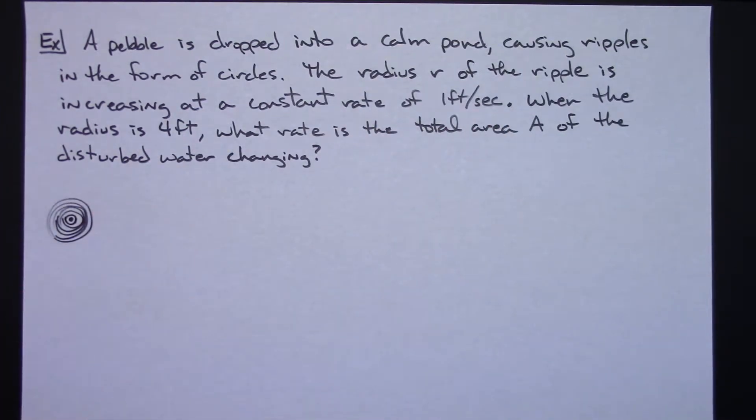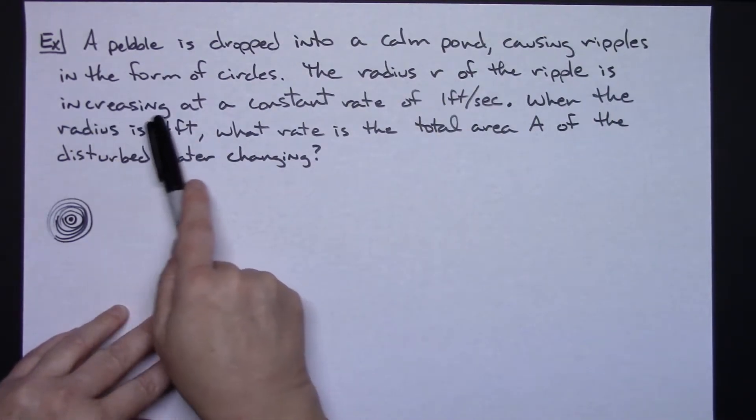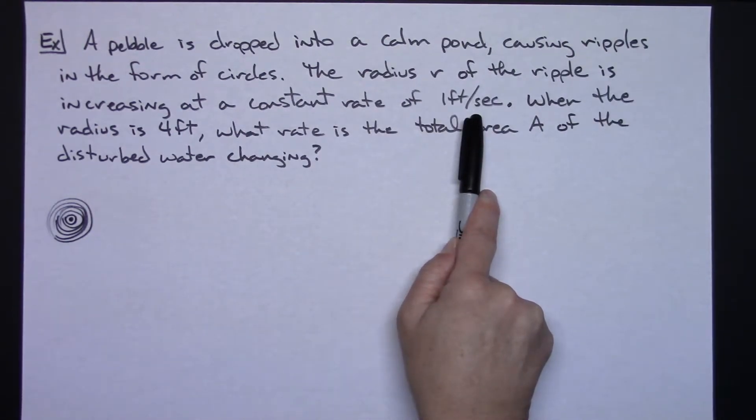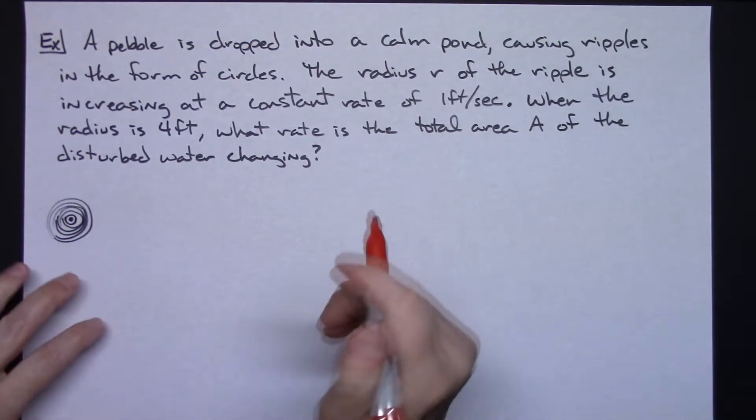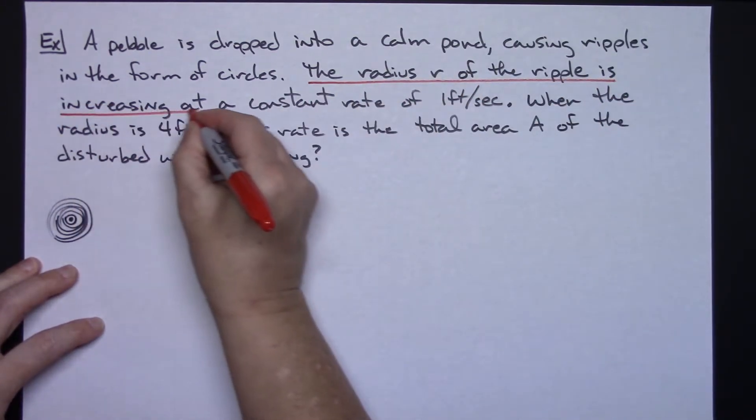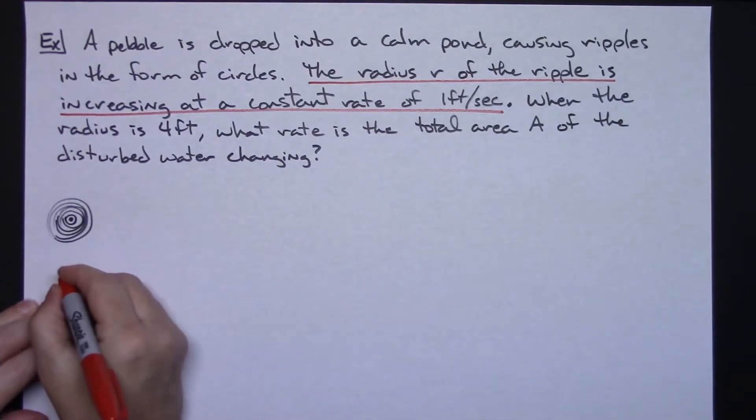Now let's see where it says the radius r of the ripple is increasing at a constant rate of change one foot per second. The radius is changing with respect to time. Let's write that down as what we're given.